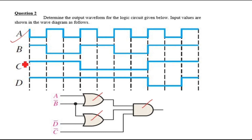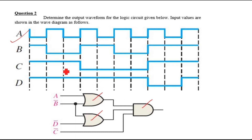Our first approach is to convert the inputs into complement form. If you start directly without doing this, since 'a' is in normal form and 'b' is in complement form, when you try to draw the output waveform for each gate it may confuse you and lead to a wrong answer. So our first step will be to draw the complement inputs: a, b̄, c̄, and d̄.